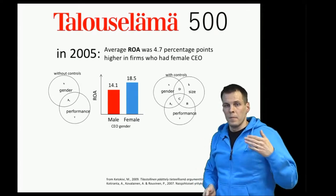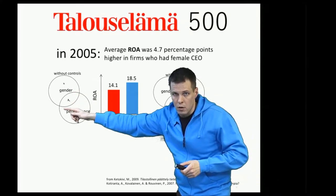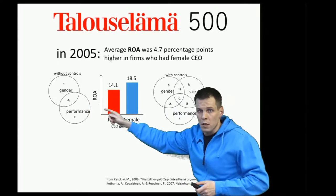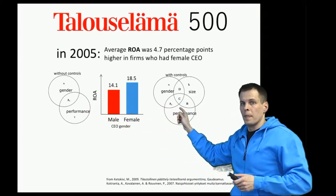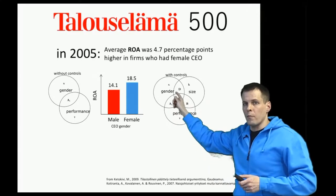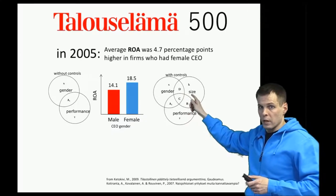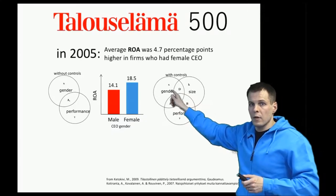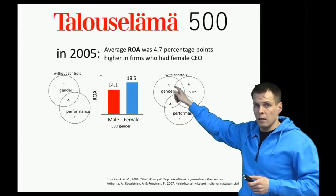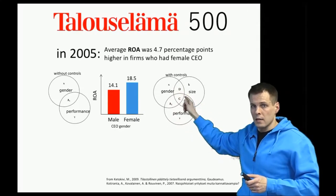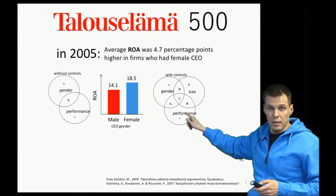So there is actually an overlap between gender and performance here. The correlation is partially caused by gender, but it's partially also because smaller companies are more likely to hire women as CEOs, and smaller companies are more profitable. So this relationship between gender and performance is at least partially explained by size being a factor in CEO decisions and size being a factor in influencing performance.